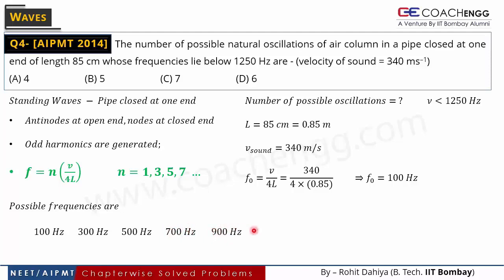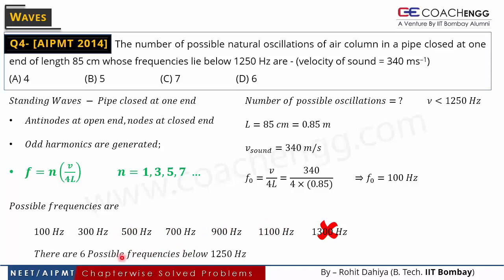After 1100 Hz, the next harmonic is 1300 Hz, which exceeds 1250 Hz, so we stop. We only count frequencies below 1250 Hz: 100, 300, 500, 700, 900, and 1100 Hz — that is 6 possible frequencies. So option D was the correct answer. This same question also appeared recently in JEE Main with the exact same values.